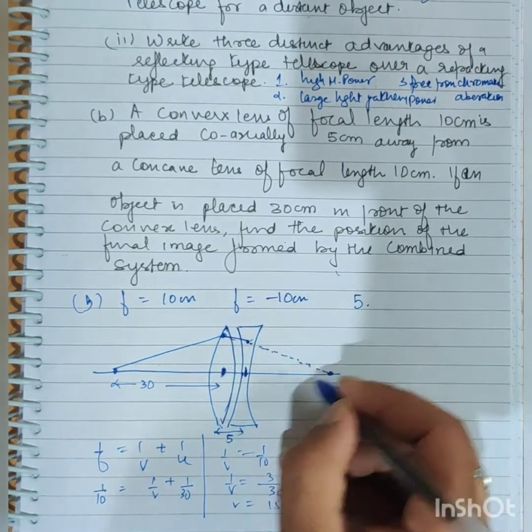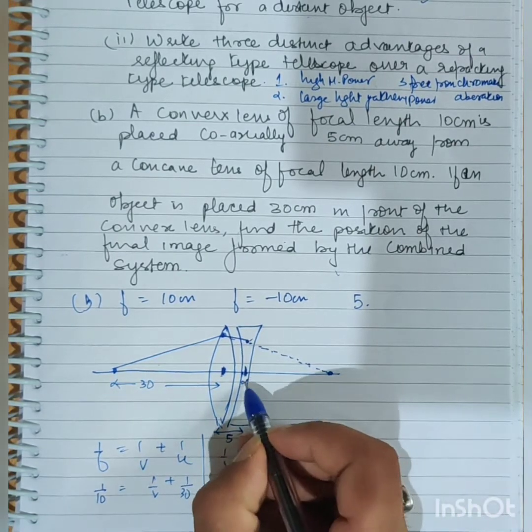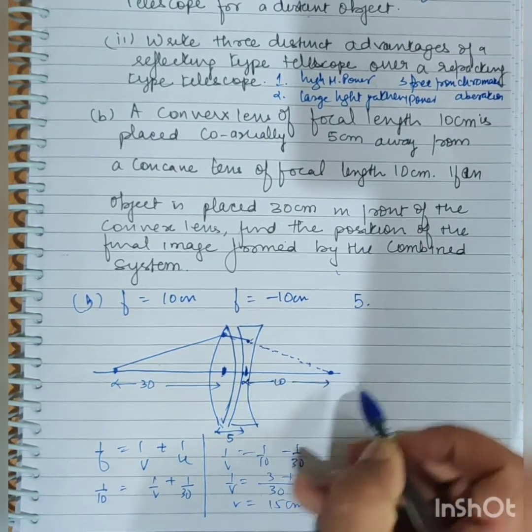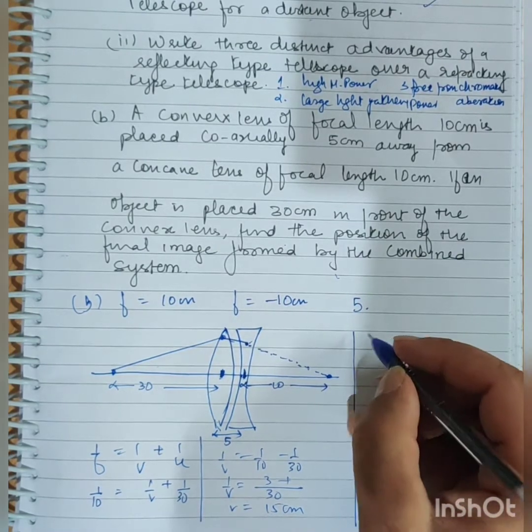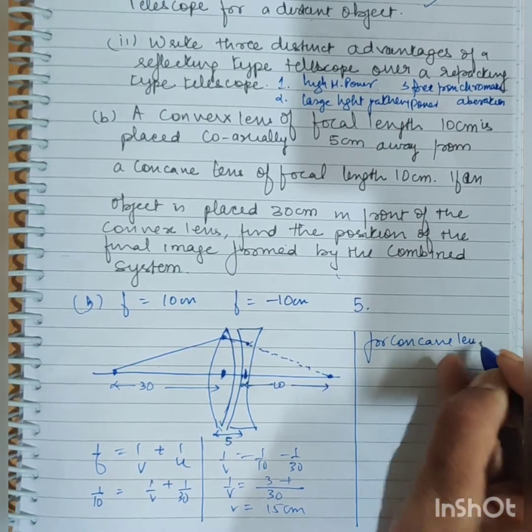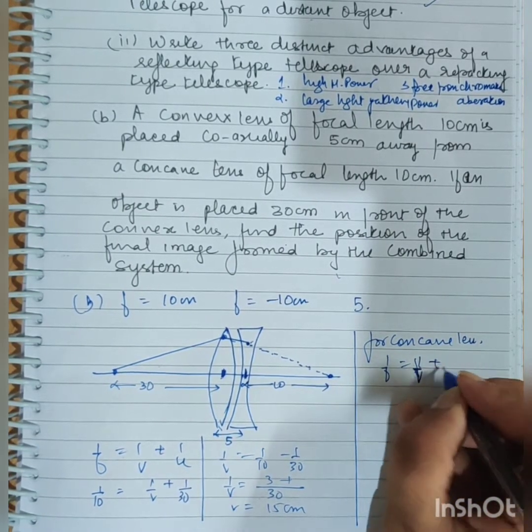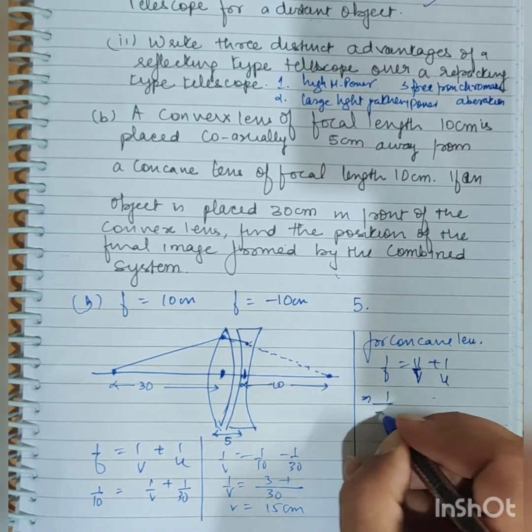This should be 10 cm from the image. So now for the concave lens, 1 by f equals 1 by v plus 1 by u. f is minus 10.